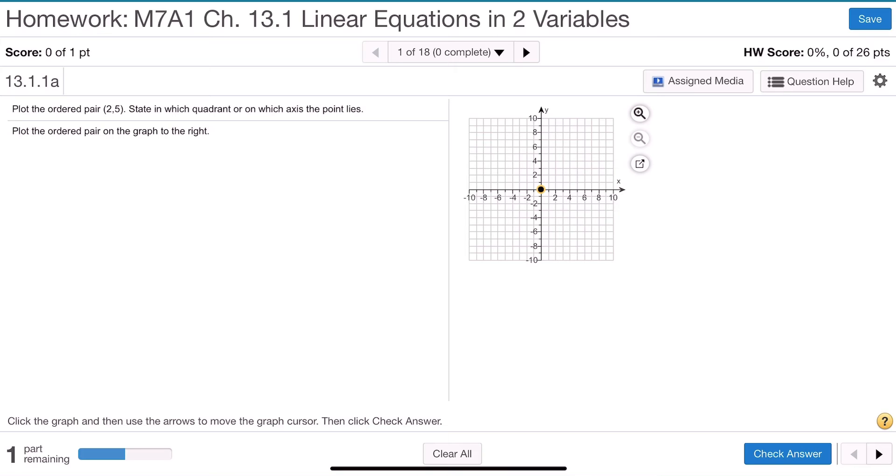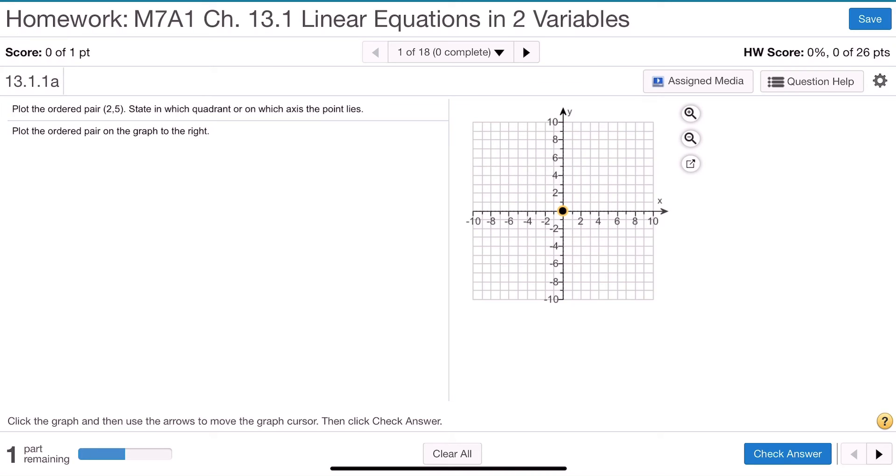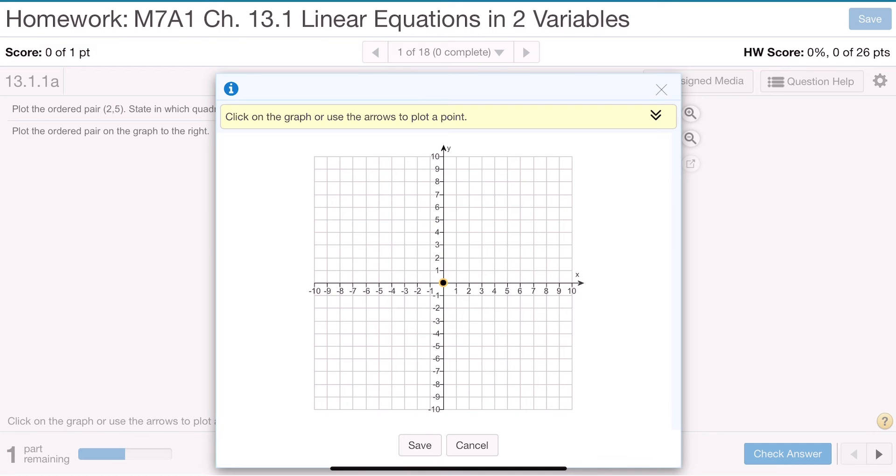In this question, you have an ordered pair 2,5, and they're asking you to plot that ordered pair on the graph paper. The graph paper may be a little small for you to look at, so there are a couple of options. You can press the magnifying glass with the plus and make it a little bit larger, or you can press the third choice down, which is a sheet of paper, and it opens a larger sheet of graph paper.